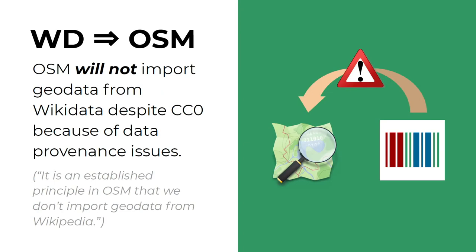Conversely, OpenStreetMap will not import data from Wikidata despite the CC0 license, because of data provenance issues. If you're not familiar with how coordinates are added into Wikipedia articles — usually users just go to Google Maps, search, and copy the coordinates that show up. In OpenStreetMap, we avoid copying data from third-party proprietary sources such as Google Maps. Because of that, OpenStreetMap will never import data from Wikipedia or Wikidata, because most coordinates in Wikidata have been imported from Wikipedia.